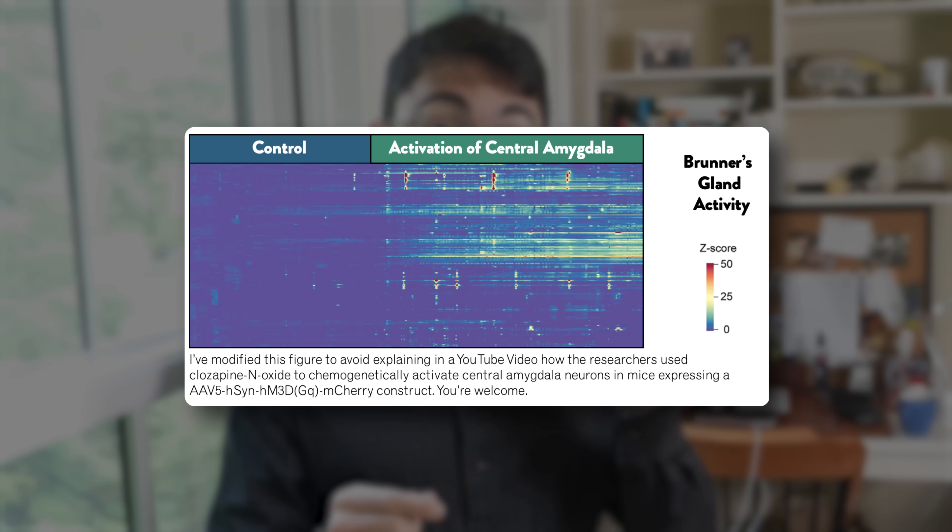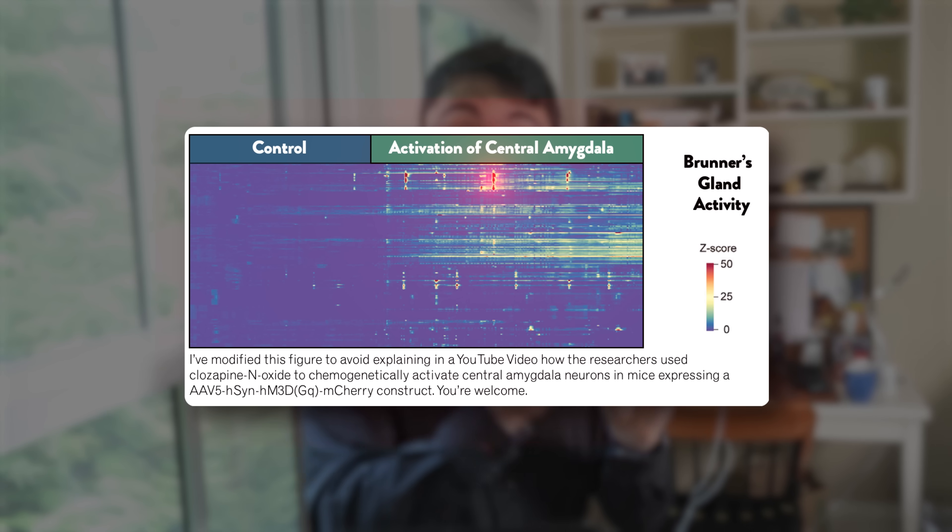Now, let's complete the picture by adding the master controller to the system, the brain. They found, the researchers found that one critical brain region, the central amygdala, which is the core of an almond-shaped brain center involved in emotions and stress response, was the master regulator. Indeed, the researchers found that activation of the central amygdala enhanced signaling through the vagus nerve and thus increased Bruner's gland activity to lead to increased Lactobacillus and improved gut function.